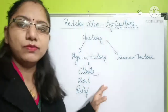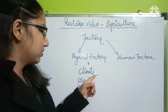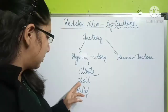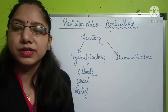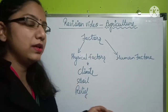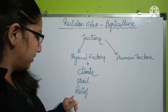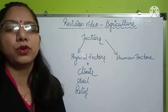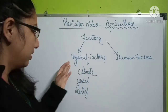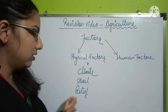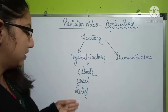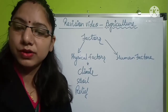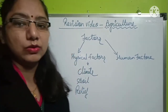Climate is a very important factor because every type of crop requires a different climatic zone. Soil is important for its texture, its ability to hold water, and many other properties. Relief — the altitude and topography of a particular area — is also an important physical factor. Additionally, availability of water, rainfall, sunlight, and many other factors can be included.